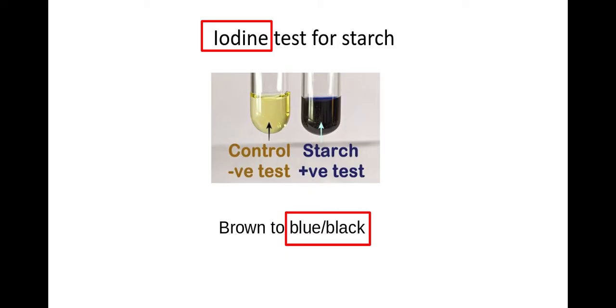This test you met at GCSE so it should be very familiar to you. Iodine is like a browny colour and if starch is present we'll get a blue-black solution.